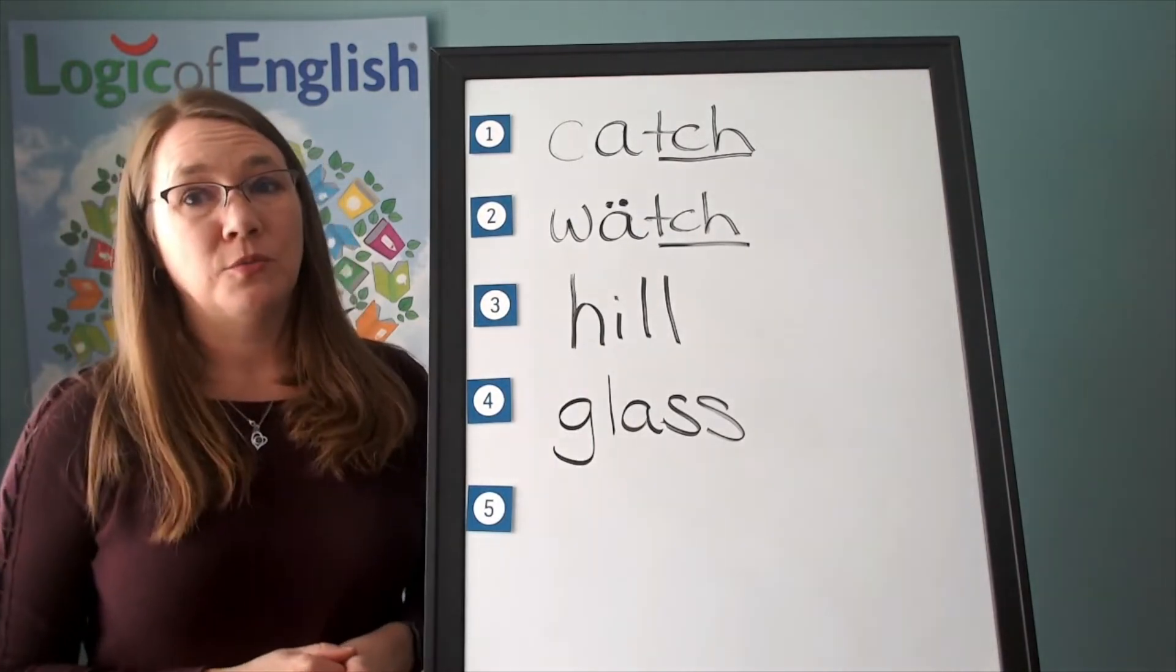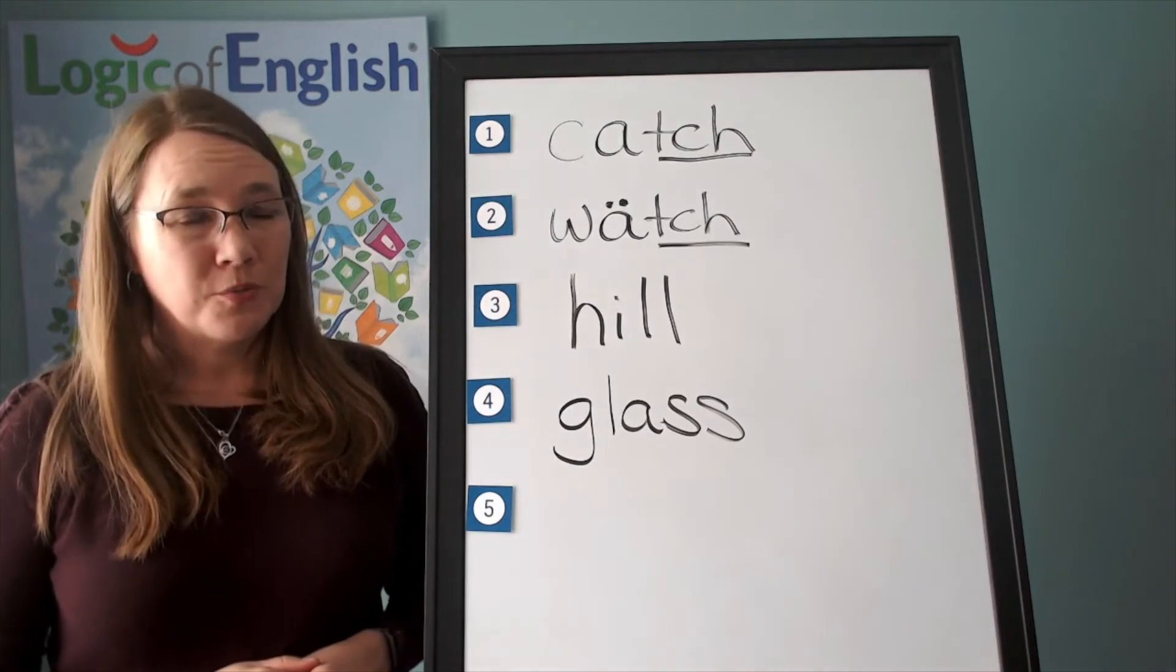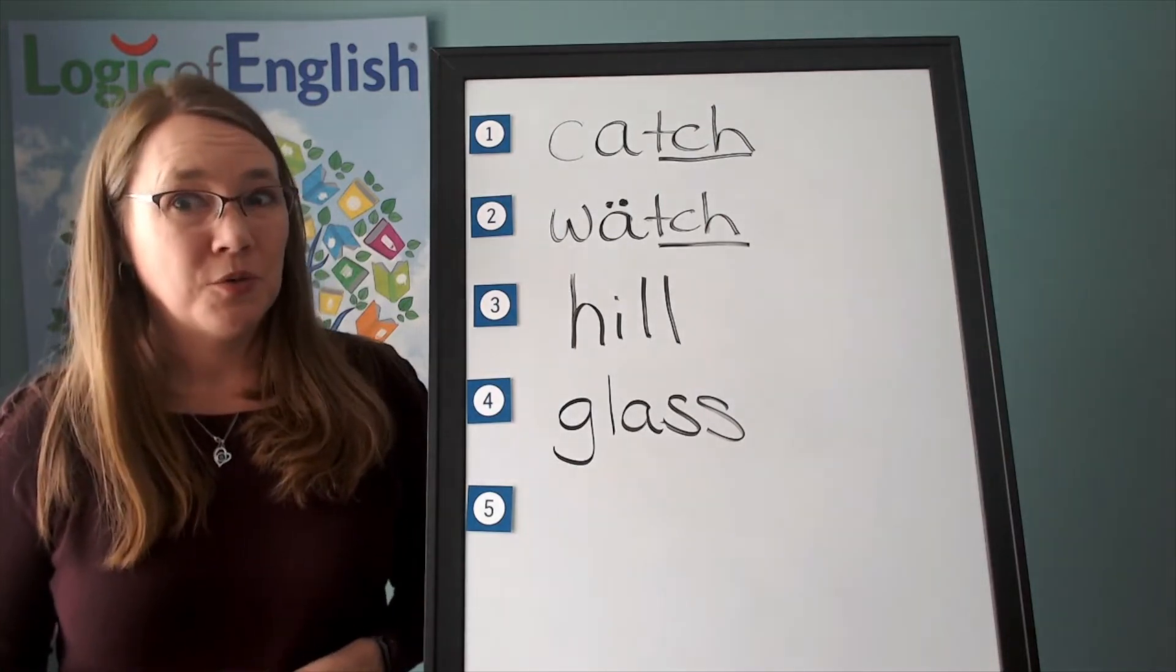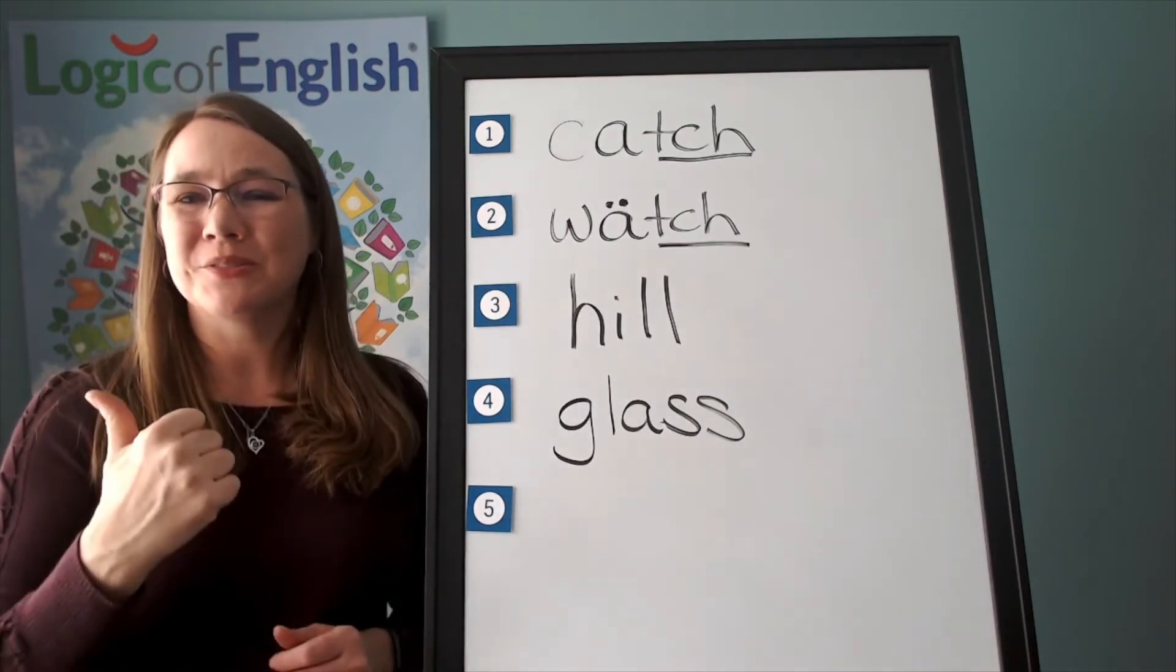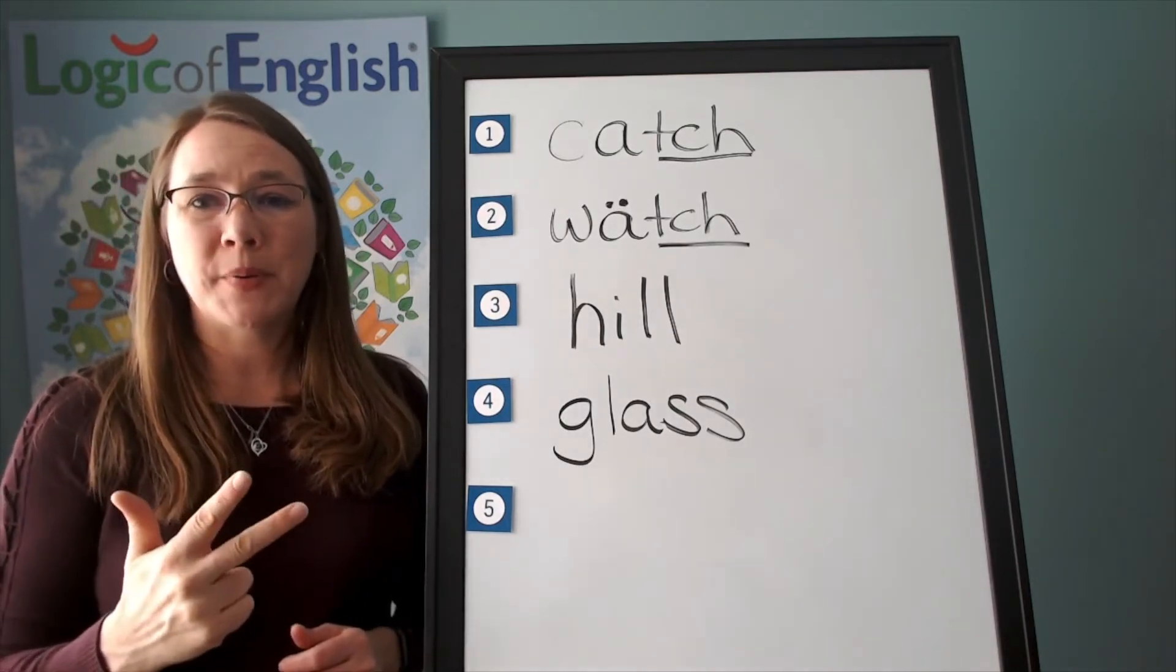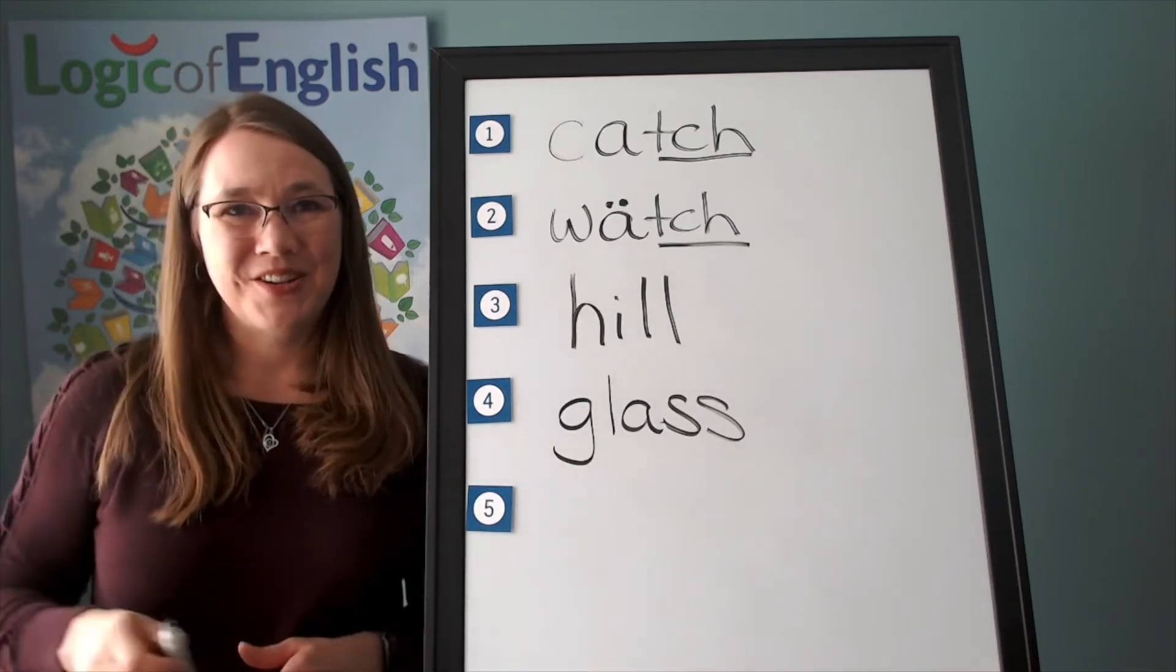The next word is rope. That is a big long rope that he climbed up. Rope. Let's sound out rope. Rope. Or say rope. Rope. Now let's sound it out. R, o, p. Silent final e. Very good.